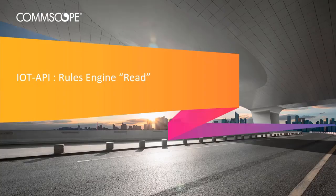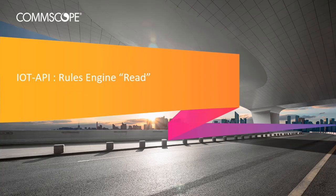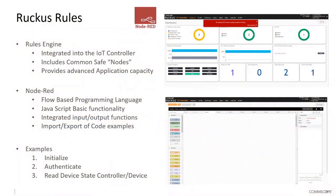In this module for the IoT controller API, we're going to look specifically at how we can use the API within a rules engine to do a read. Just as we followed before using the command line, we now want to use the rules engine built into the IoT controller to get the same information but bring it into a flow-based programming rules engine.